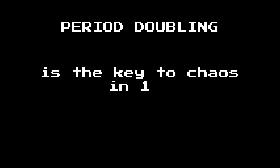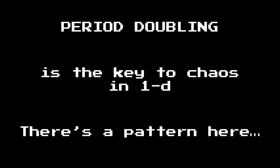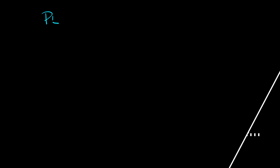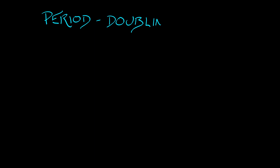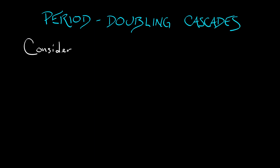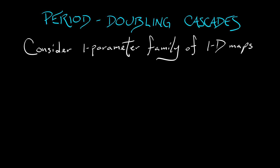The period doubling that we saw in the logistic map is really the key to understanding how chaos develops in 1D. Recall the period doubling cascade that we saw in the logistic map, and let's consider other one-parameter families of one-dimensional maps which evolve from having simple dynamics to chaotic dynamics.